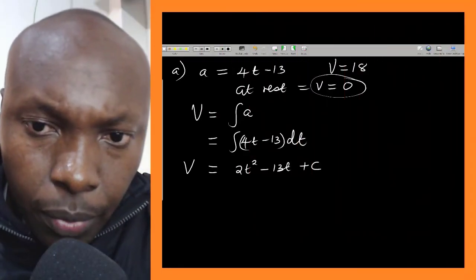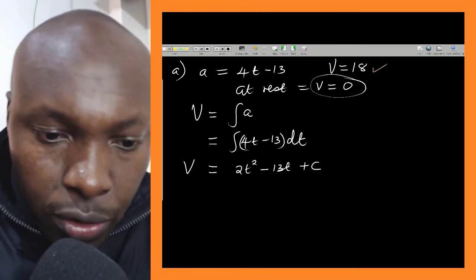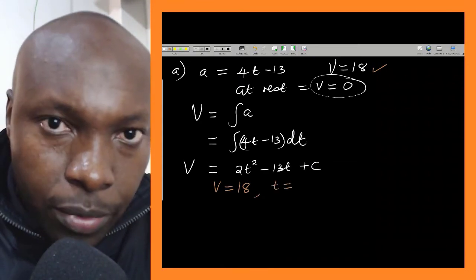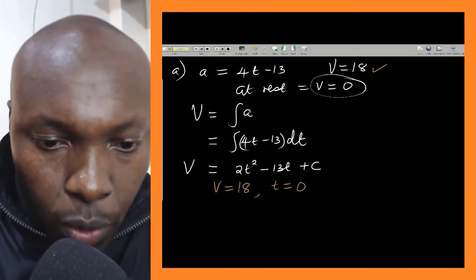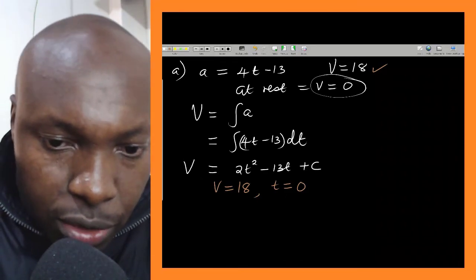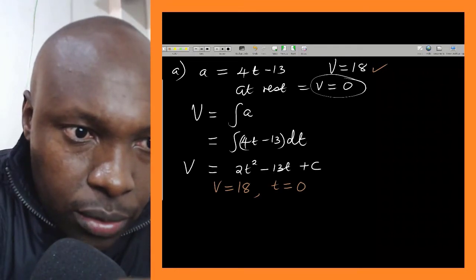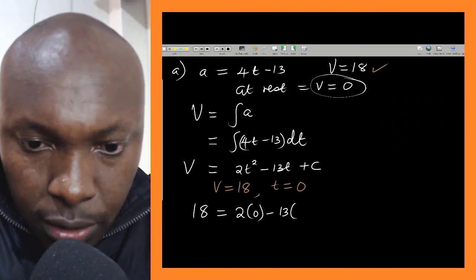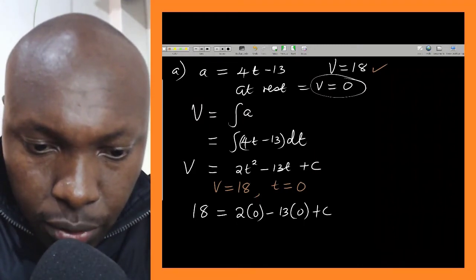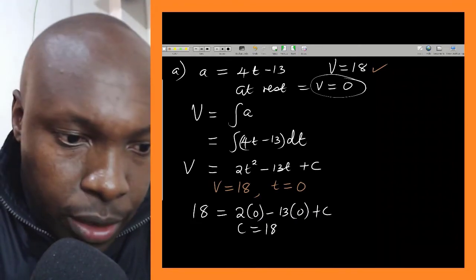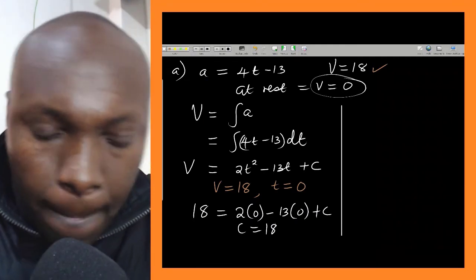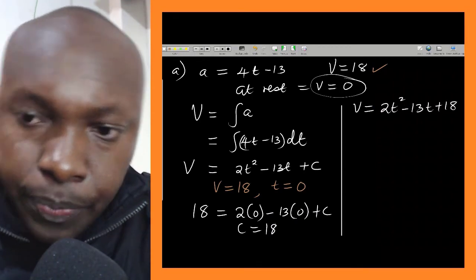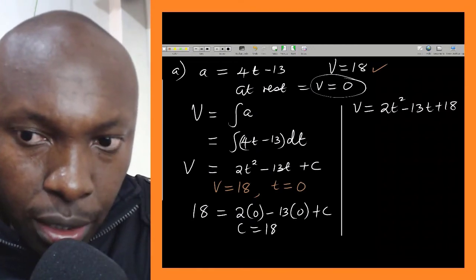To find the constant c, we use the initial conditions. The initial velocity equals 18, and at initial velocity, time is zero seconds. Substituting v = 18 and t = 0 into the velocity expression: 18 = 2(0)² minus 13(0) plus c, so c = 18. Therefore velocity is given by v = 2t² minus 13t plus 18.